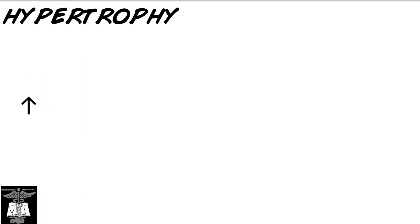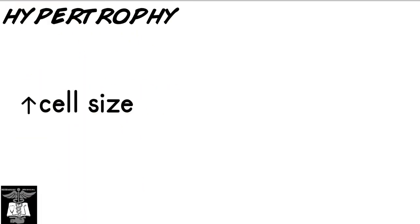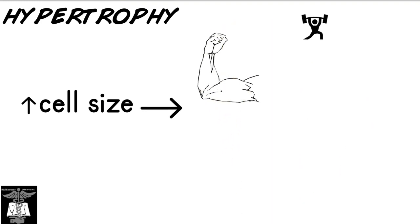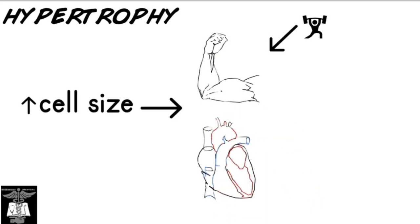Hypertrophy is an increase in cell size, usually accompanied by an increase in overall size of the organ. Examples include muscles getting bigger due to weight training, or the heart wall thickening due to having to work harder in a patient with hypertension.